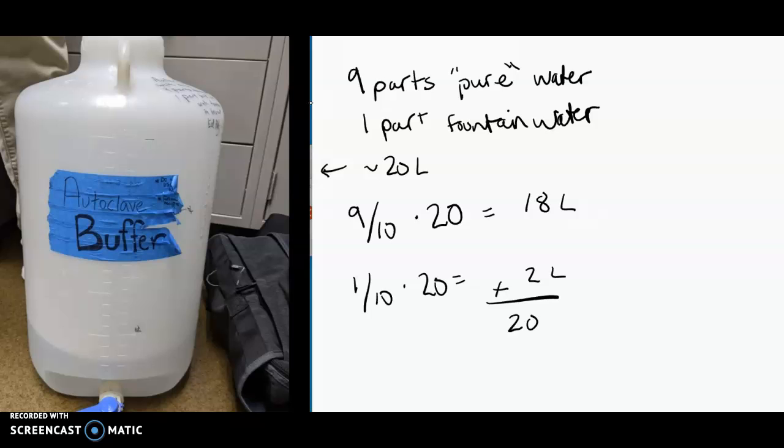Let's say that instead of 20 liters, we wanted to make 30 liters. Again, you're just going to take 9/10 times 30 to get your pure water and 1/10 of 30 to get your fountain water.